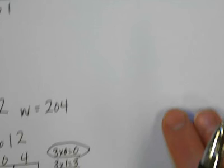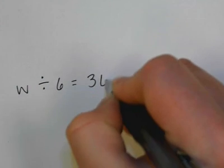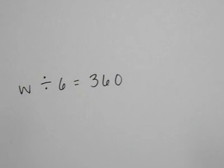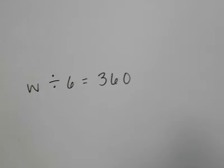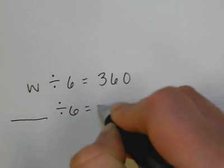Let's look at one more problem. If I have W divided by 6 is equal to 360. The first thing I would do is rewrite it and put a blank. Blank divided by 6 is equal to 360.